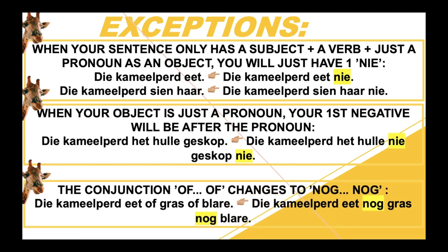The third exception is the one case where there's not a 'nie' at the end of the sentence — that's the only time this would happen. So if you have the conjunction 'of', the 'of' would change to 'nog'. So 'die kameelpaard het of gras of blare geëet' would change to 'die kameelpaard het nog gras nog blare geëet'.